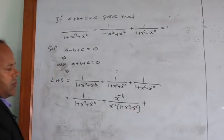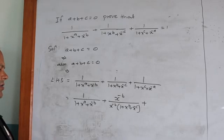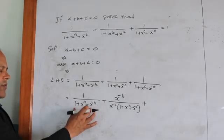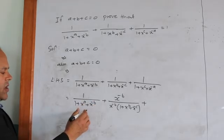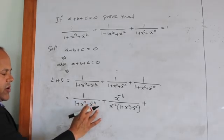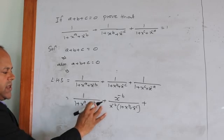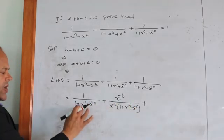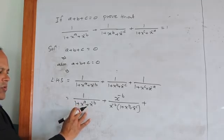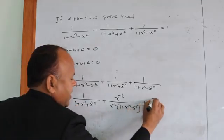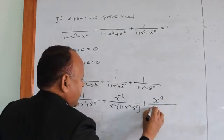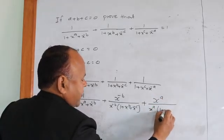The third fraction is also to be multiplied by a certain quantity. To determine this, we look again at the denominator of the first fraction. Out of x^a and x^(minus b), we have already used x^(minus b) for the second fraction. So for the third fraction, we must multiply by x raise to the power a only. So we multiply both numerator and denominator of the third fraction by x raise to the power a.